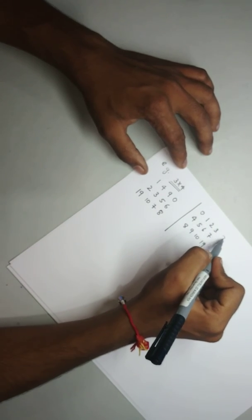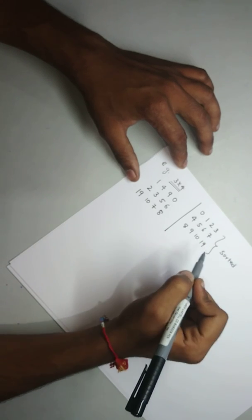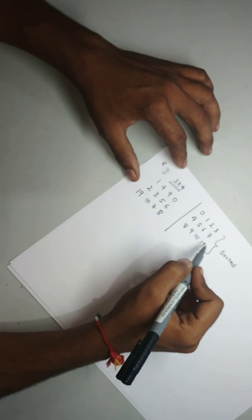Then our output of sorted array in ascending order is 0, 1, 2, 3, 4, 5, 6, 7, 8, 9, 10 and 19.